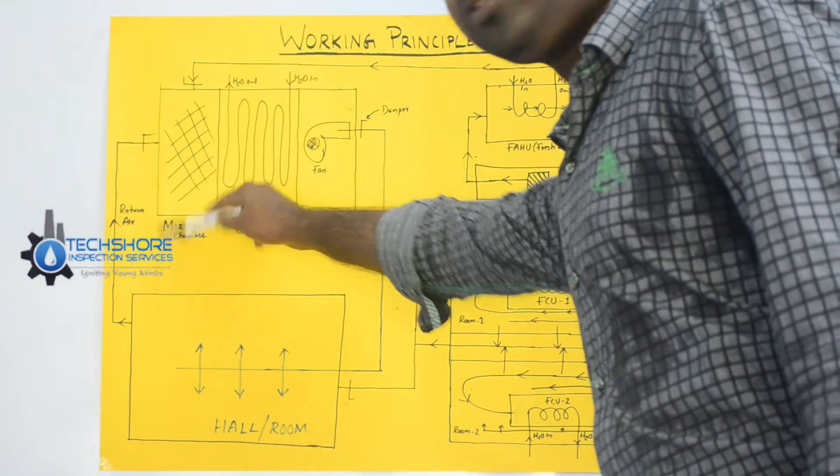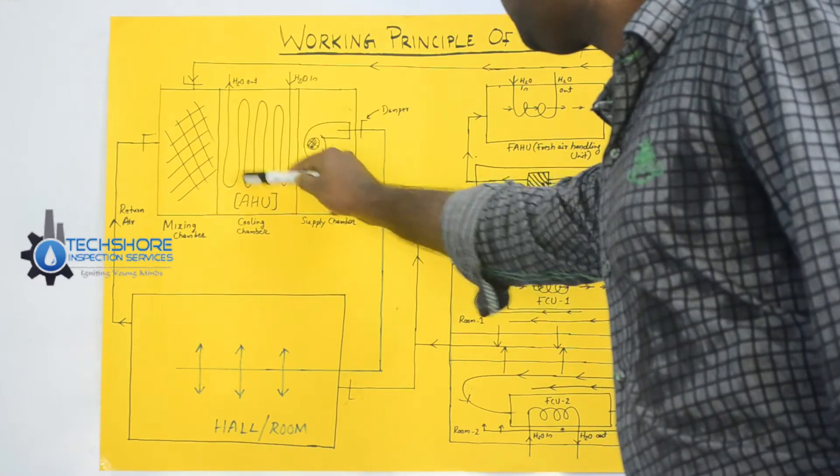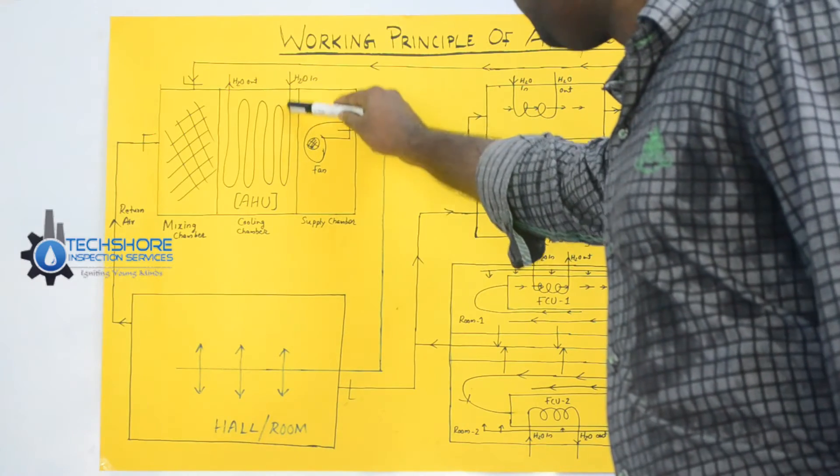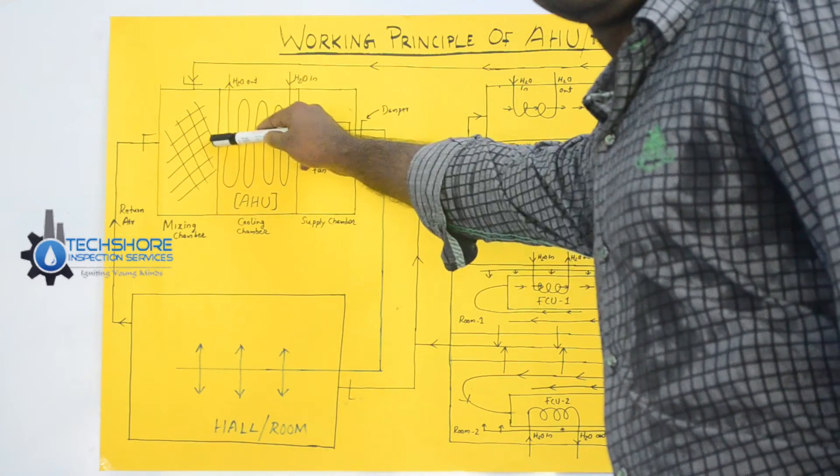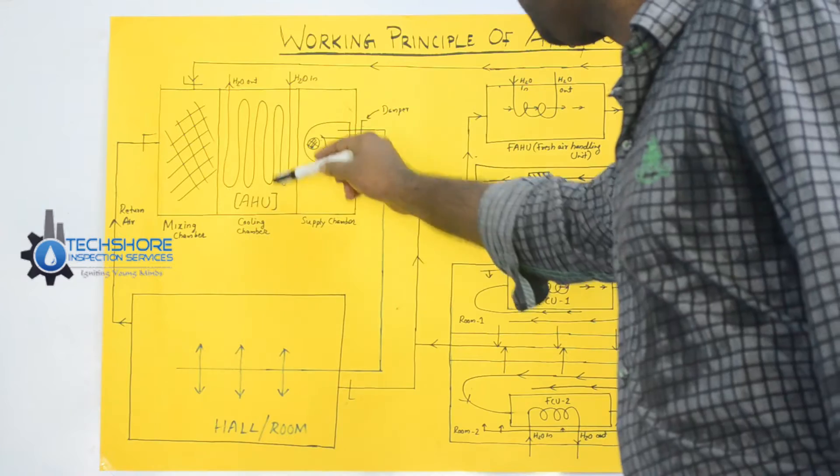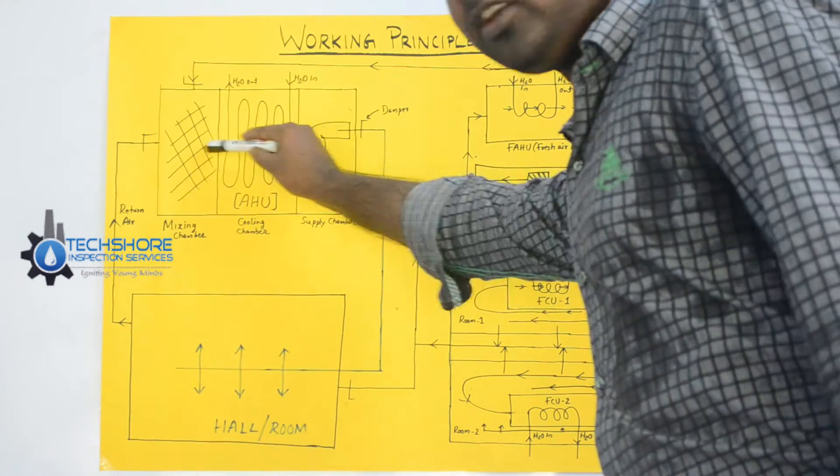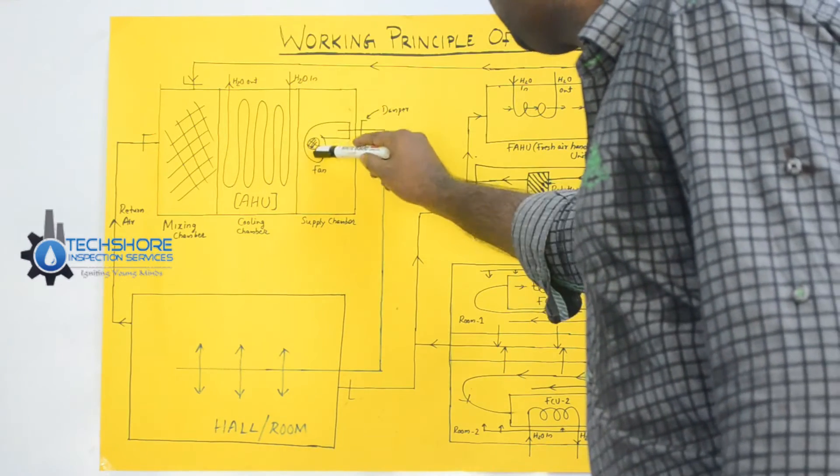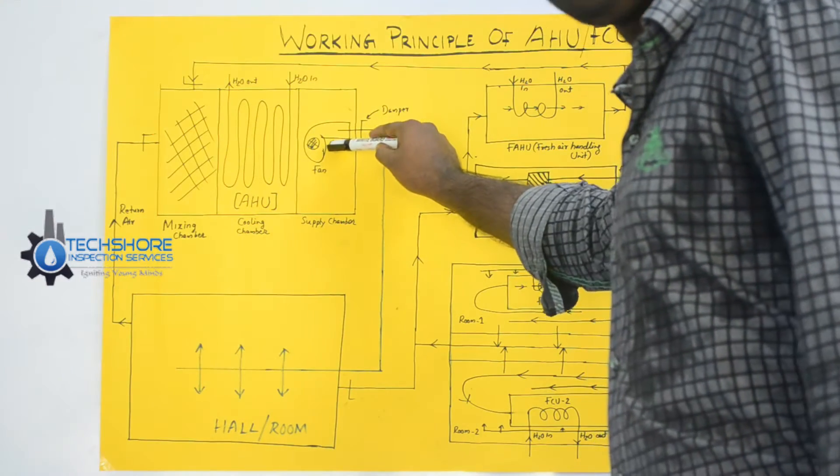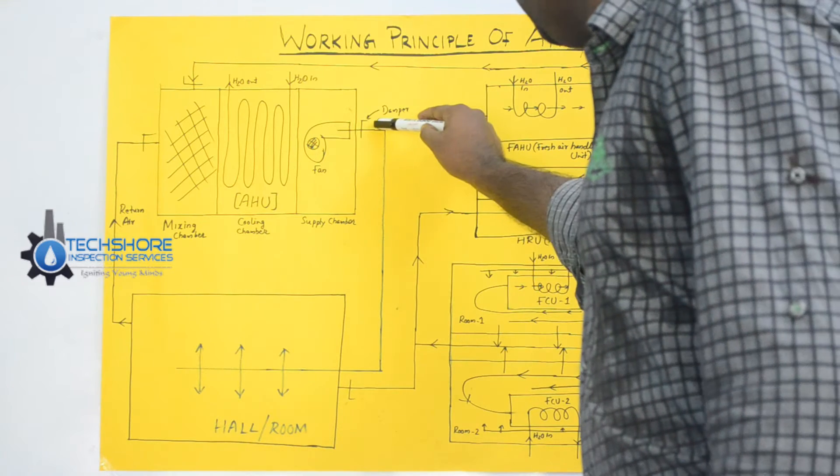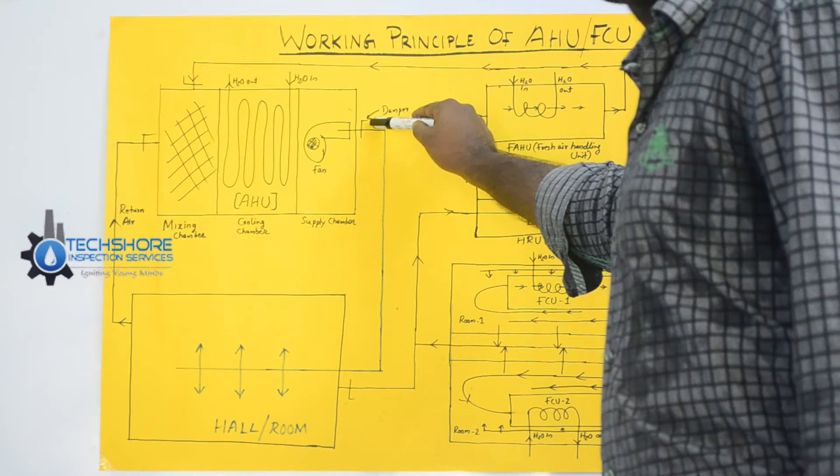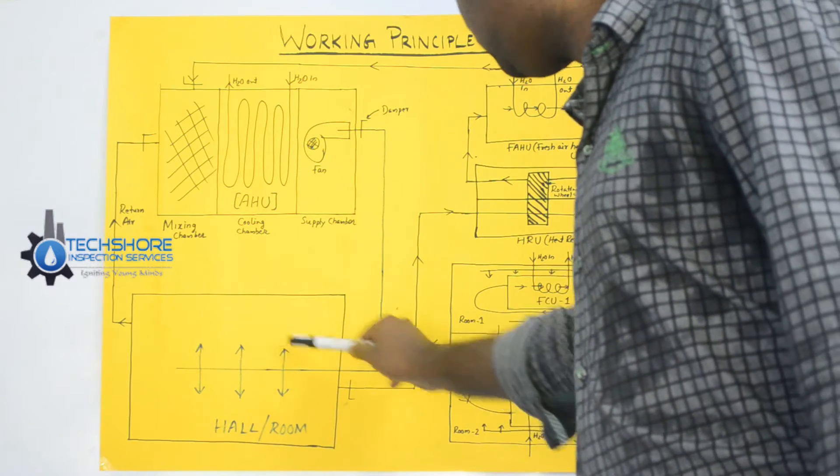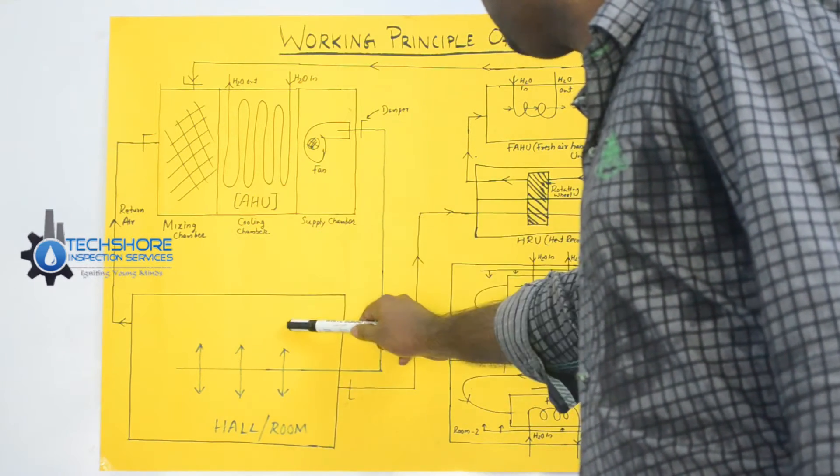Atmospheric air plus this room air, then it is passing through the coil. This coiled water from the chiller unit is circulated. So this cooling chamber, it is passing through like this. So this air will be cooled and it is circulated by the help of a fan or a blower. And there is a damper to control the flow of the air. So this is the working principle of an AHU.